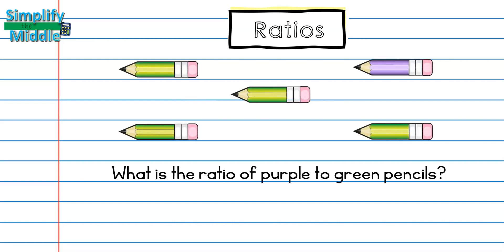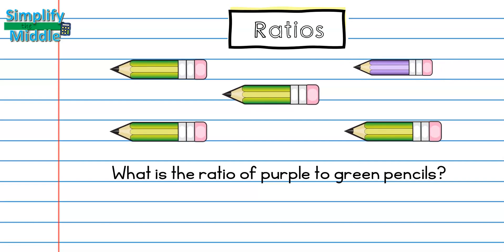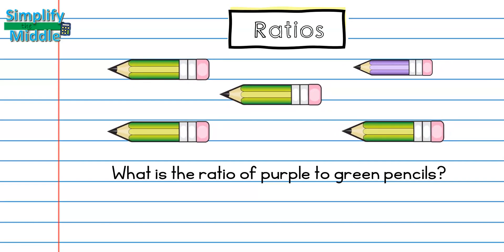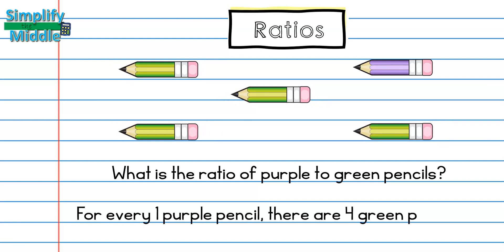This question asks: What is the ratio of purple to green pencils? I can see that I have one purple and four green pencils. This means for every one purple pencil, there are four green pencils.